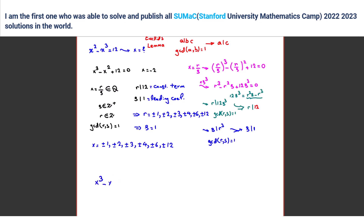Now, since x³ - x² + 12 = 0 and x = -2 is one root, we can factorize. One factor is (x + 2). Calculate the second bracket: the result is x² - 3x + 6... let me verify: x² + 3x + 6.